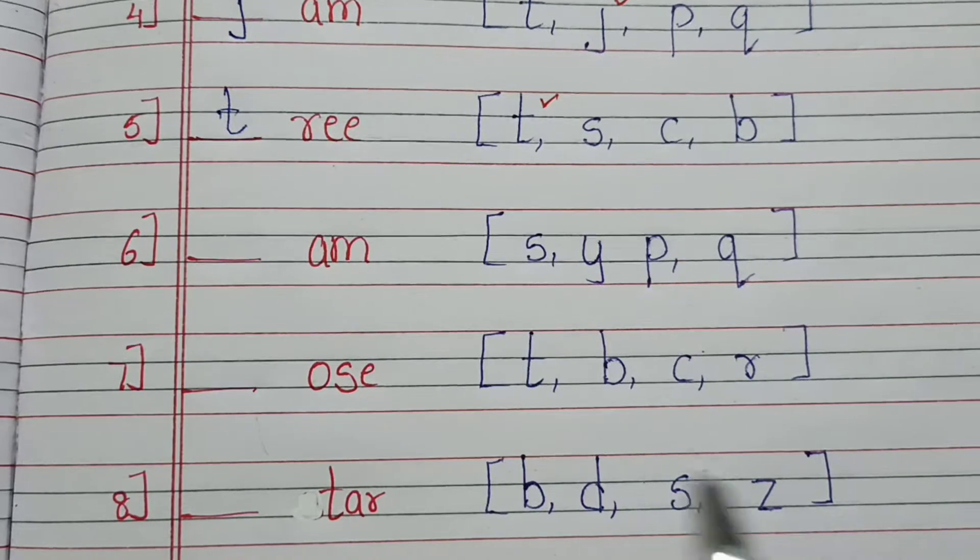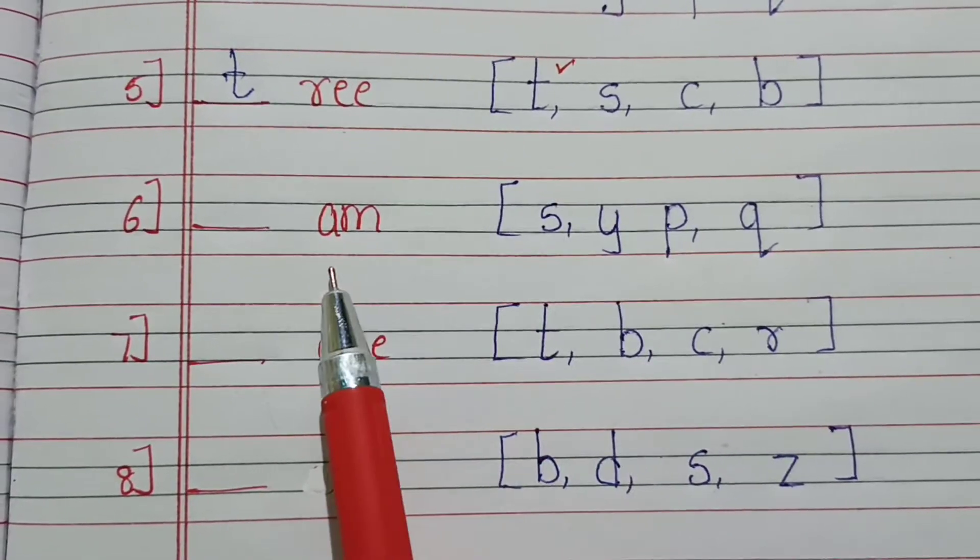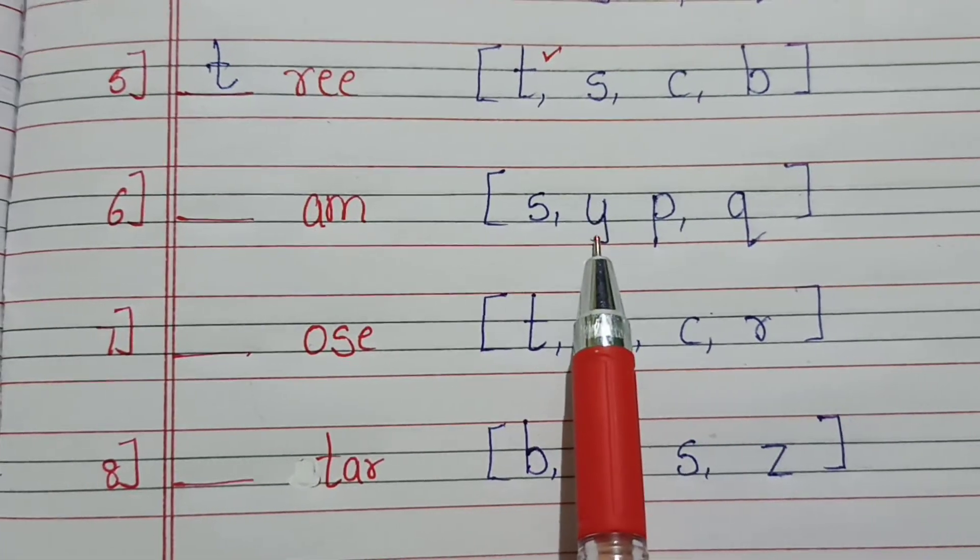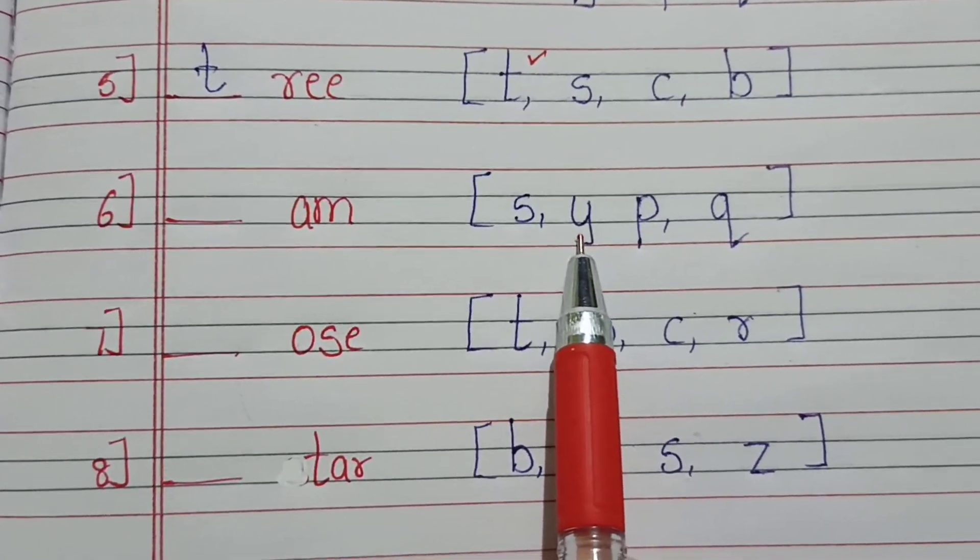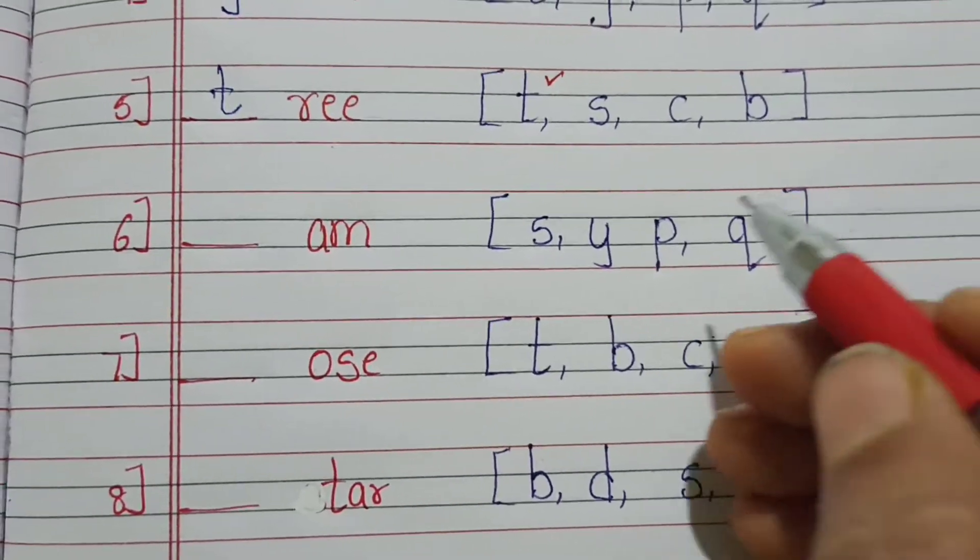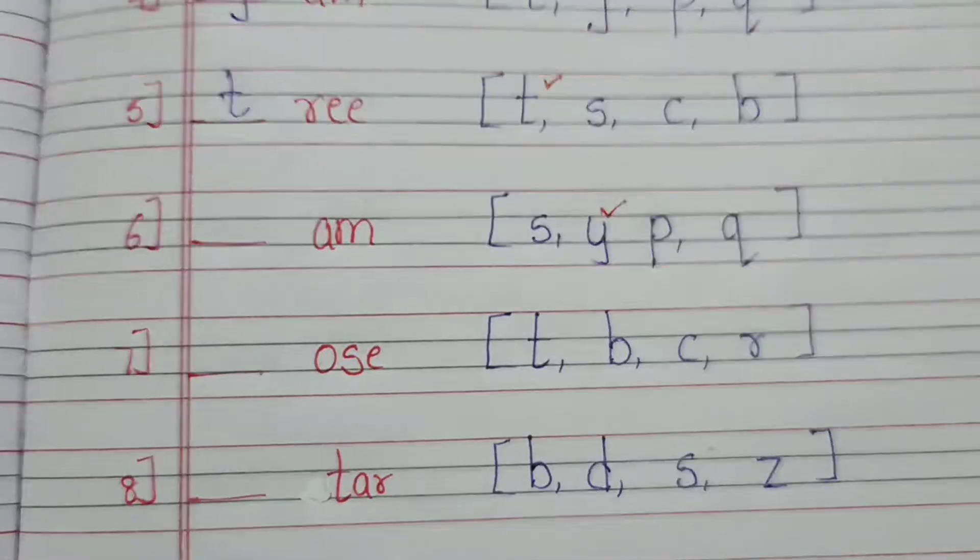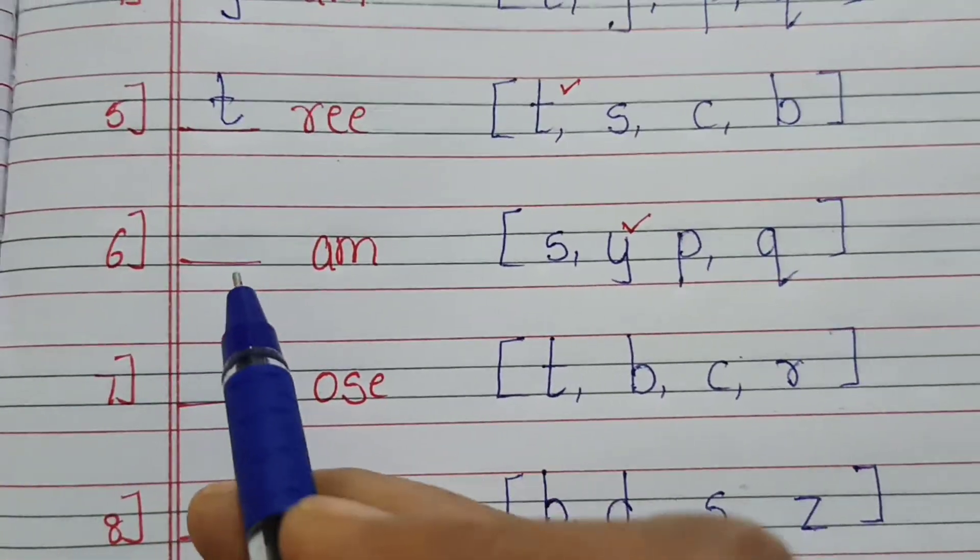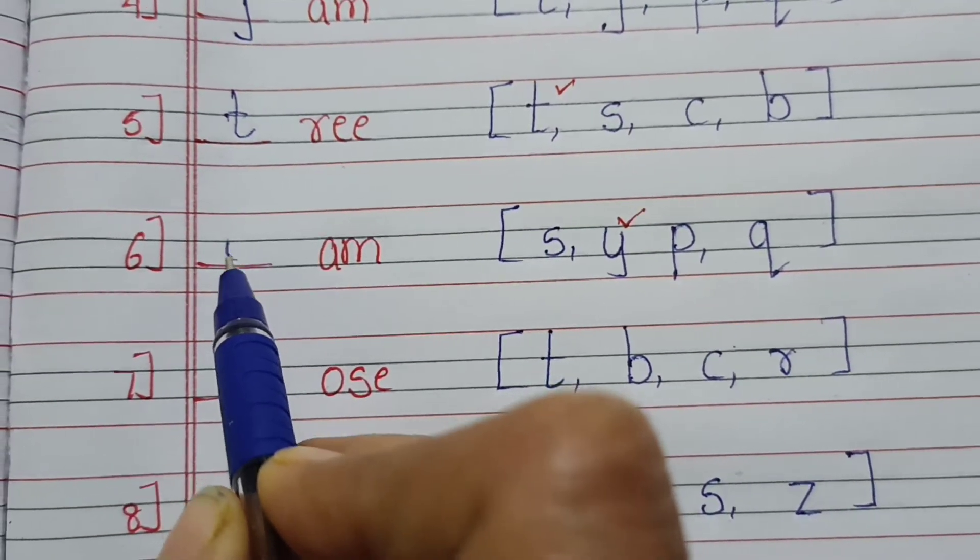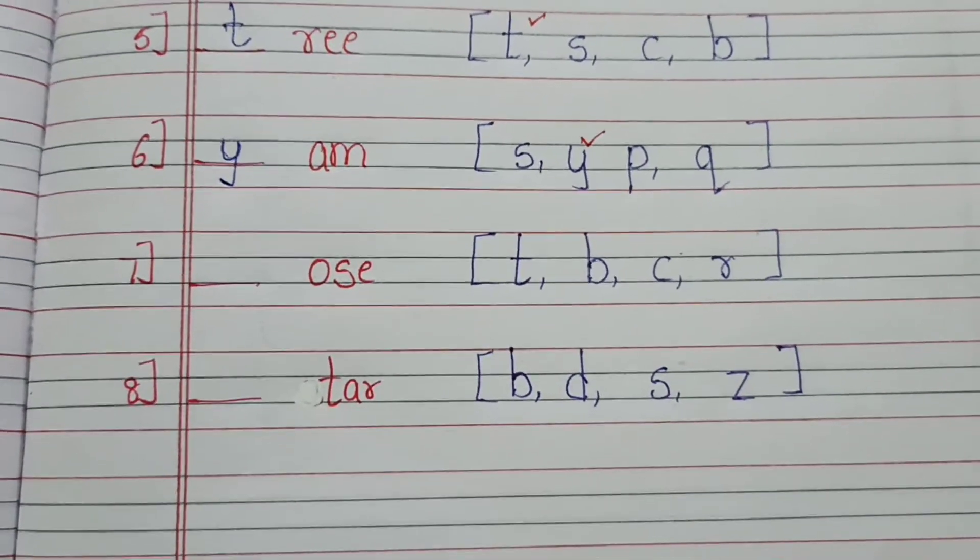Next is dash A M. So S, A, M, no. Y, A, M, yes. Y, A, M, yam. So what is the correct answer? Y. Y is the correct answer. So what we will do here? We will write Y. Y, A, M, yam.